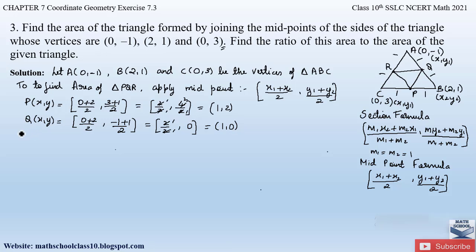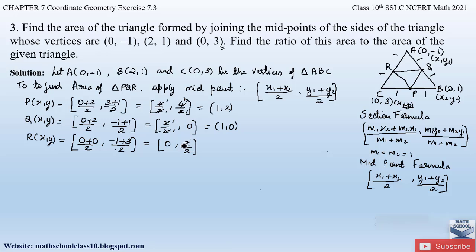For point R, take A as (x1, y1) and C as (x2, y2). Applying the formula: x = (0 + 0) / 2 = 0, and y = (-1 + 3) / 2 = 2/2 = 1. So the coordinates of R are (0, 1). These are the three coordinate values obtained for P, Q and R.